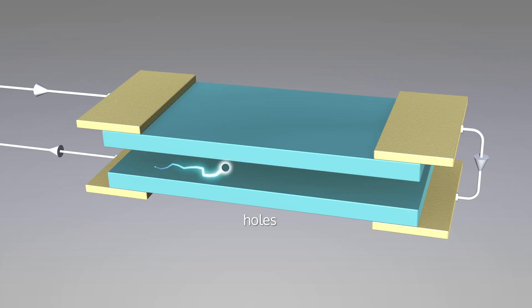which are missing electrons and act as positively charged particles. The negatively charged electrons and the positively charged holes attract each other and bind together to form an exciton.